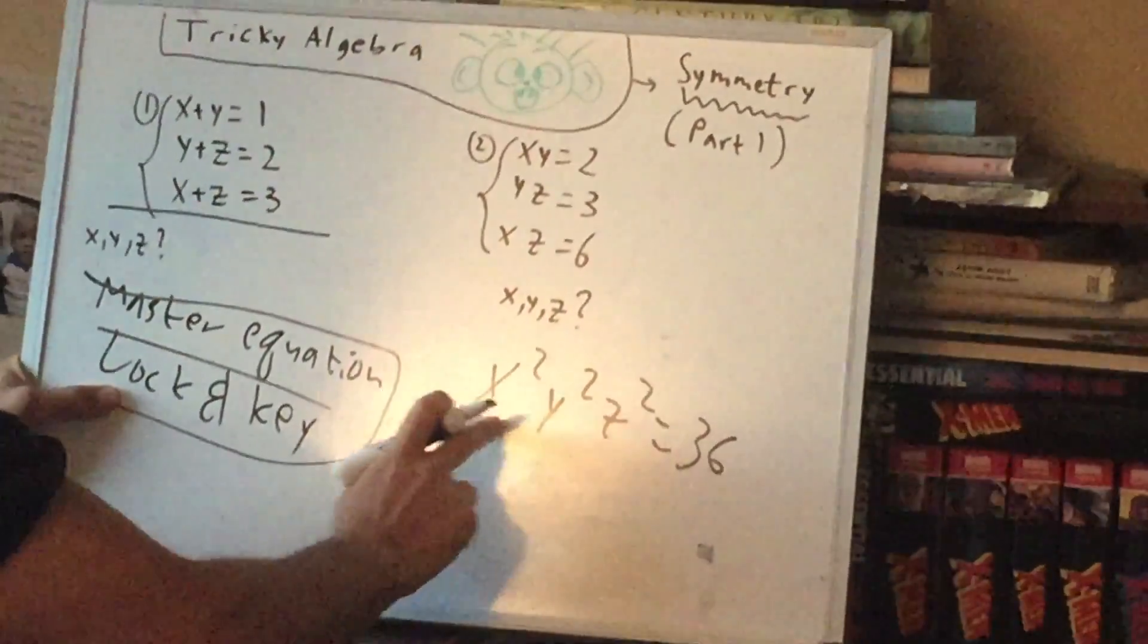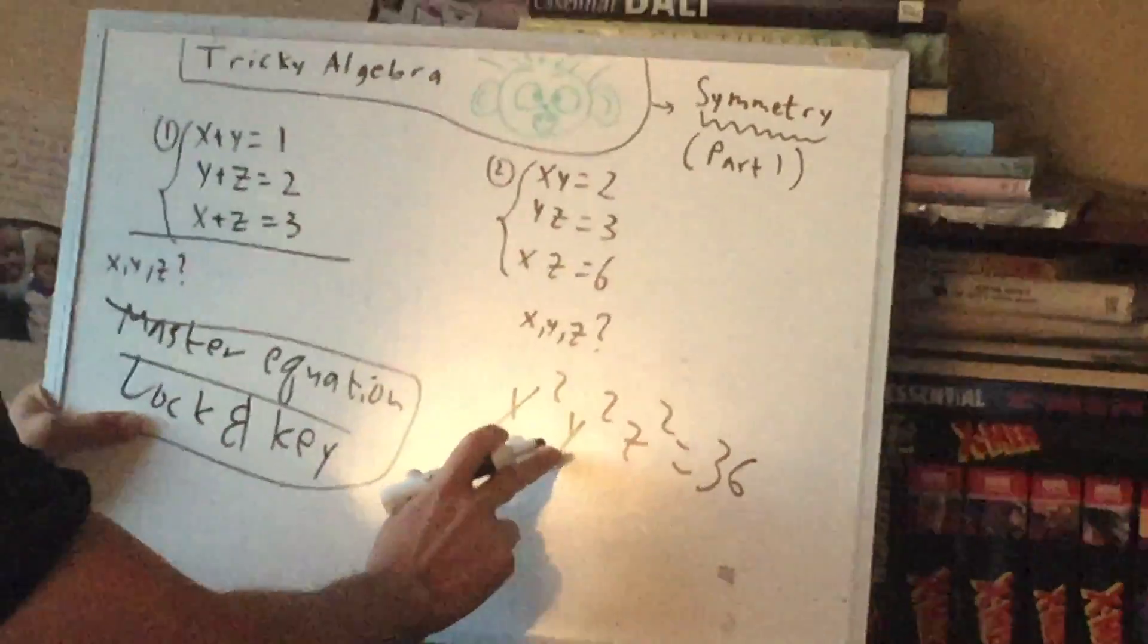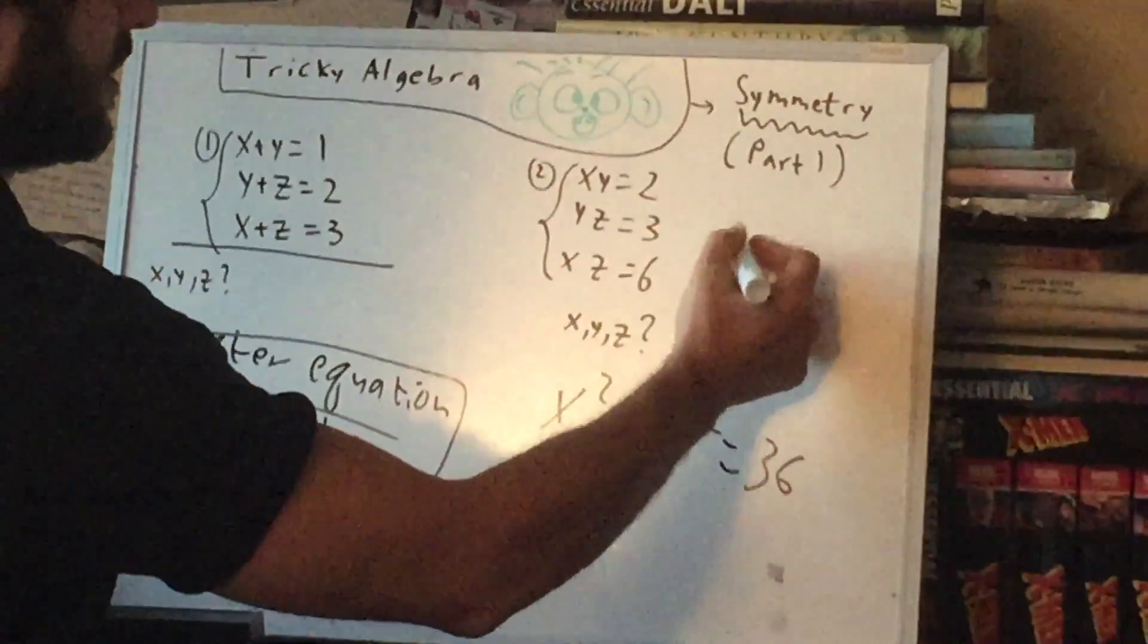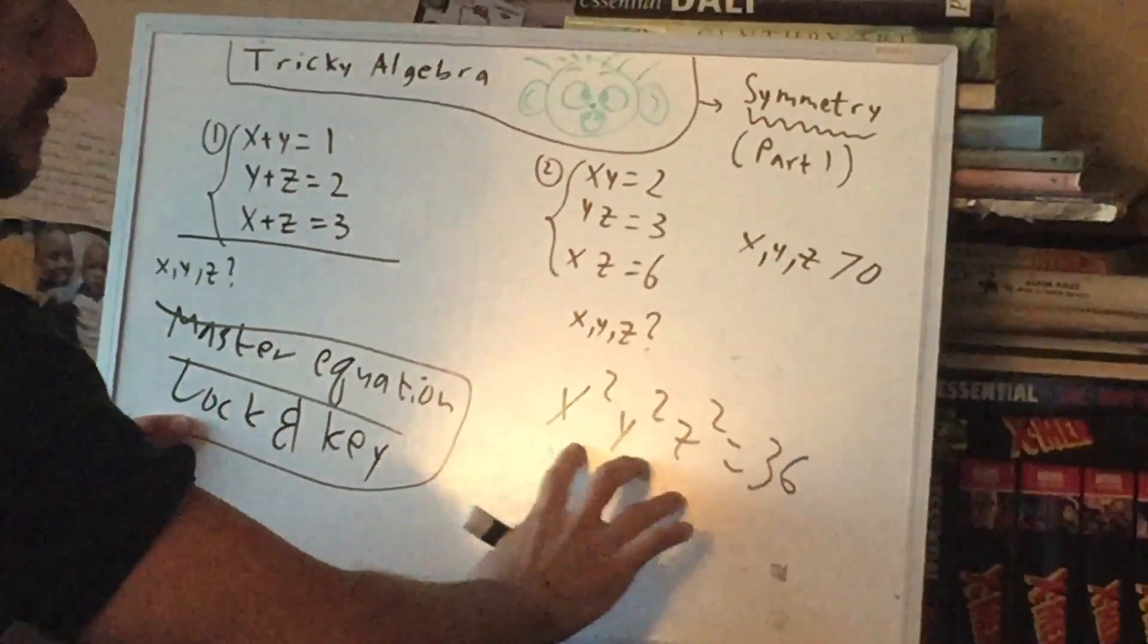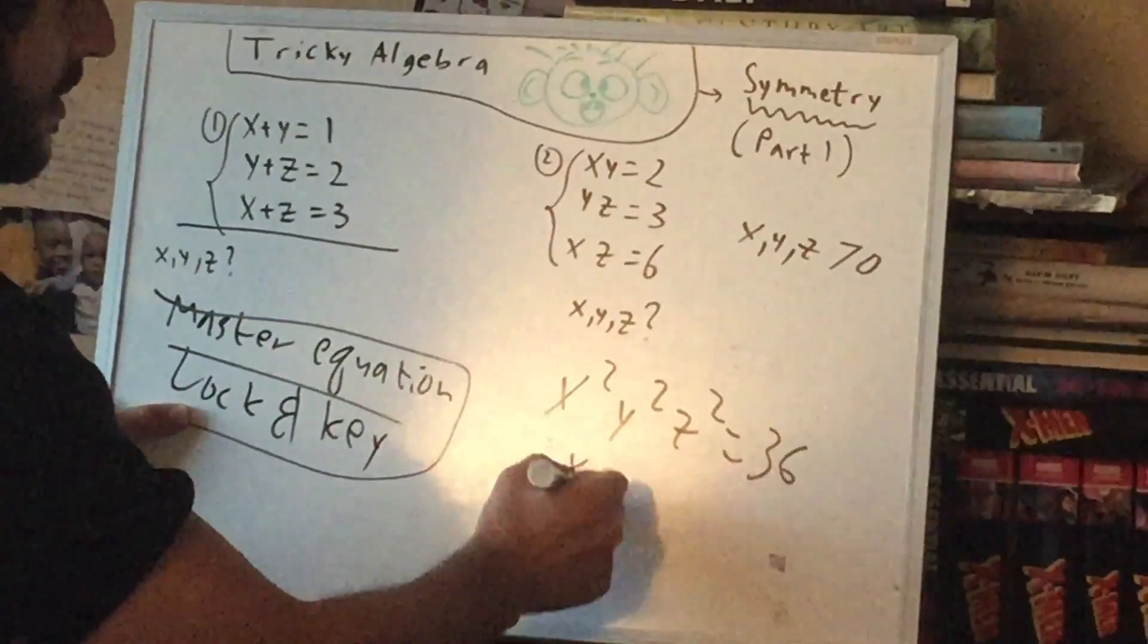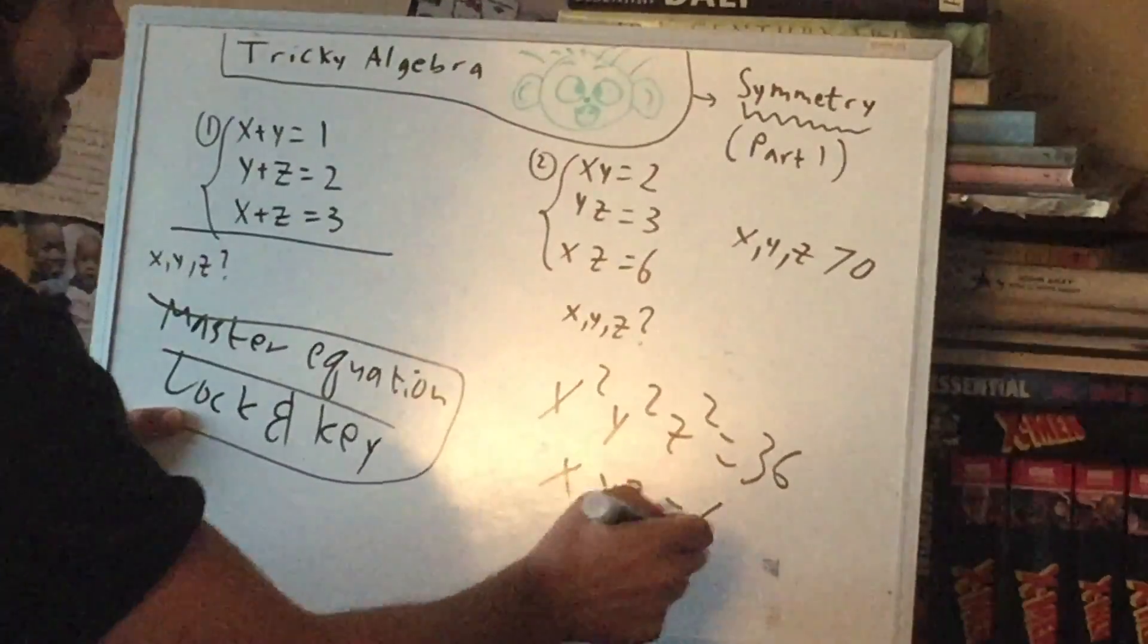Alright, now what do we do from here? We can take this, now, just to make this a little easier, let's say we're assuming they're all positive. If we take the square root of both sides, we get 6.